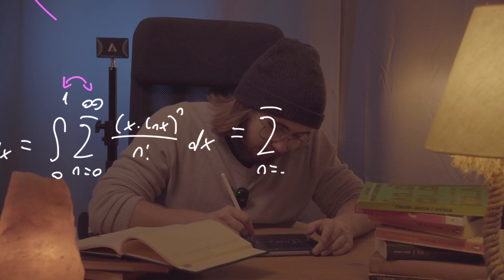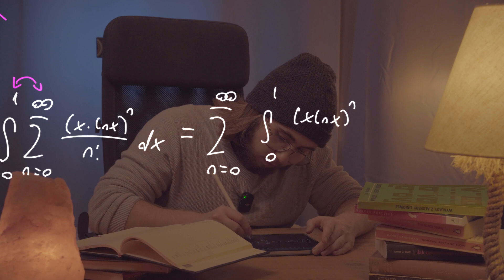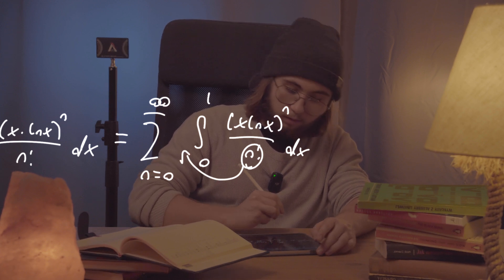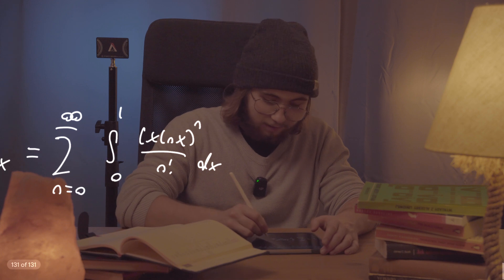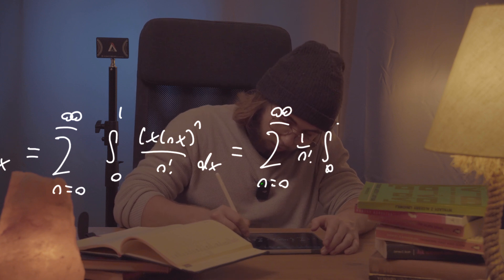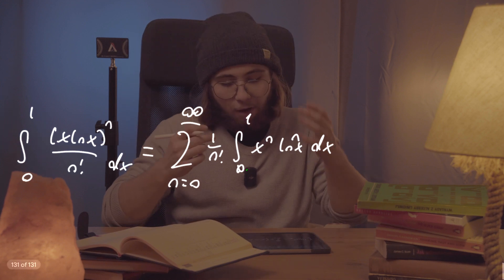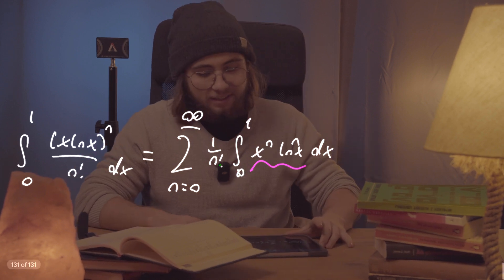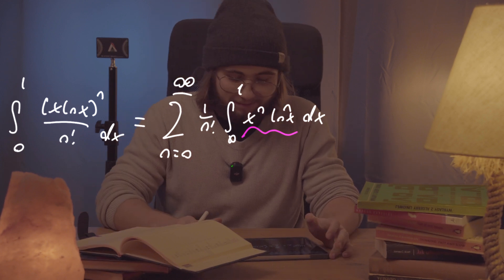So this becomes the sum as n goes from 0 to infinity of the integral from 0 to 1 of x times natural log of x, all to the power of n, divided by n factorial dx. I can factor the 1 over n factorial in front of the integral since it's just a constant with respect to x, getting 1 over n factorial times the integral from 0 to 1 of x to the power of n times natural log to the power of n of x dx. How are we supposed to evaluate this integral?